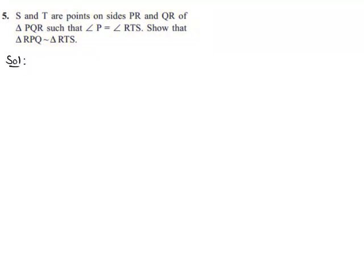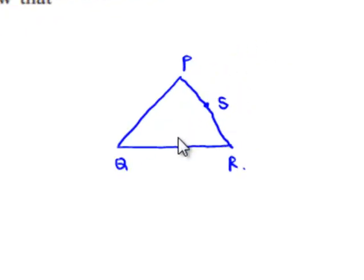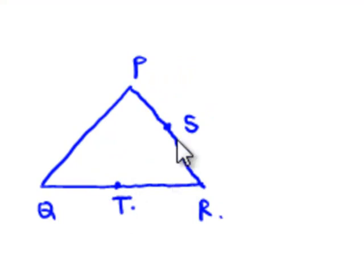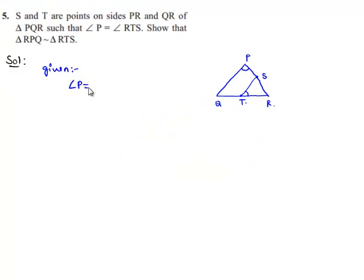There is a triangle PQR in which S is a point on PR and T is a point on QR. Now, angle P, which is nothing but angle QPR, is equal to angle RTS. So he has given that angle P is equal to angle RTS. Here angle P, which is angle QPR, is equal to angle RTS.